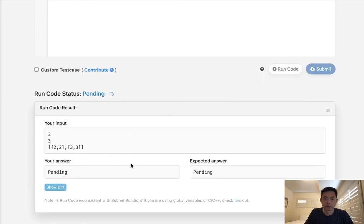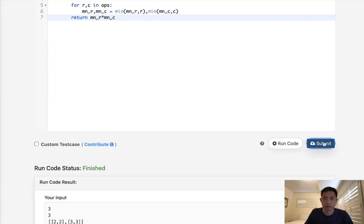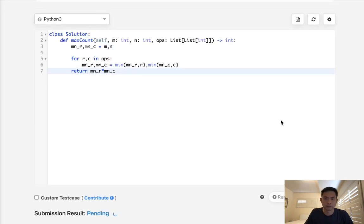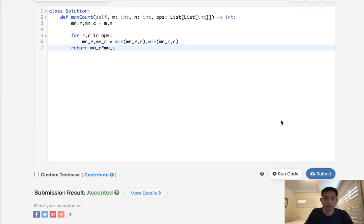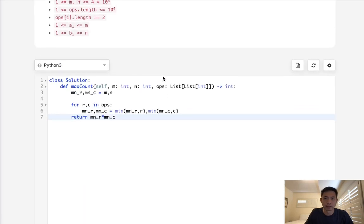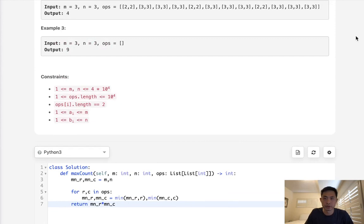Let's make sure this works. Okay, let's go ahead and submit it. There we go. So time complexity is just O of N or N being the number of operations, which is nice. And it's going to be constant space.